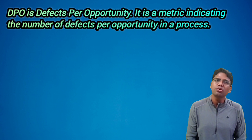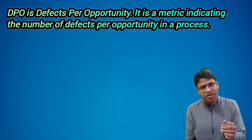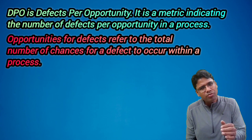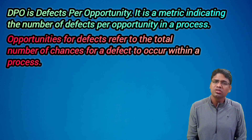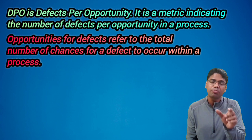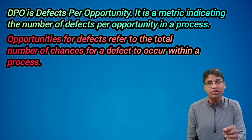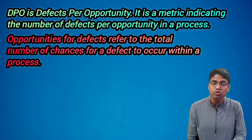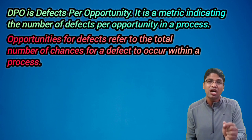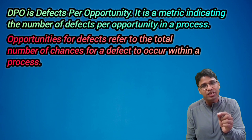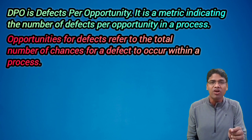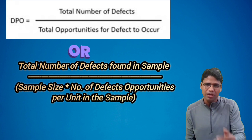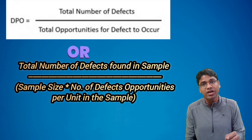Now let's discuss DPO, which stands for Defects Per Opportunity. It is a metric indicating the number of defects per opportunity in the process. Opportunity for a defect refers to the total number of chances for a defect to occur within the process. The formula is: DPO = Total Number of Defects Found in a Sample / (Sample Size × Number of Defect Opportunities Per Unit).